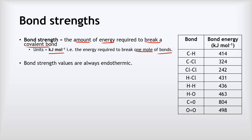Bond strength values are always endothermic because we're talking about breaking bonds — when you pull two atoms apart you have to put energy in to overcome their attraction to each other. We can see a whole range of different bond strengths, from very strong bonds like the carbon-oxygen double bond at 804 kJ/mol down to much weaker bonds like the chlorine-chlorine single bond at only 242 kJ/mol.